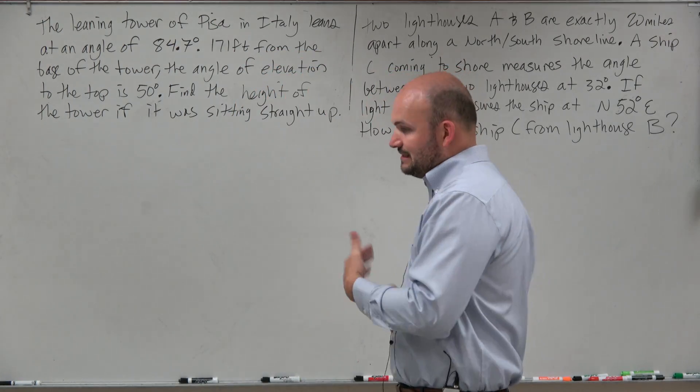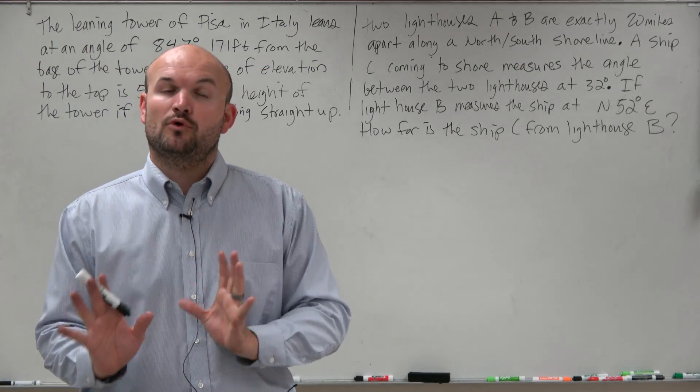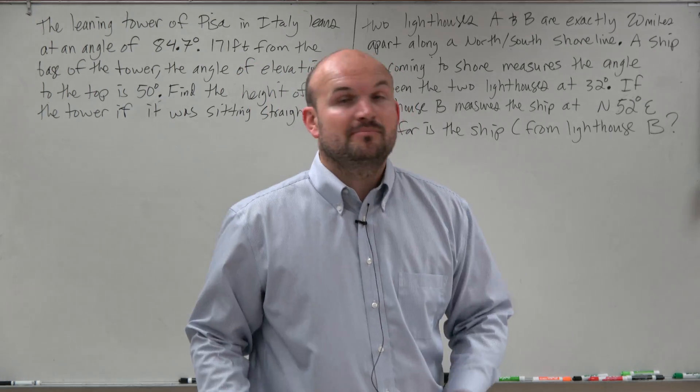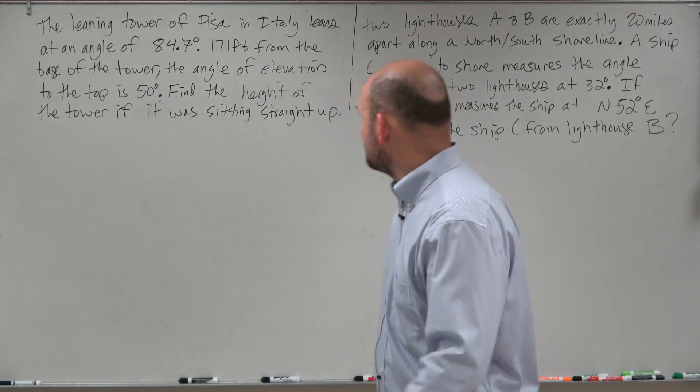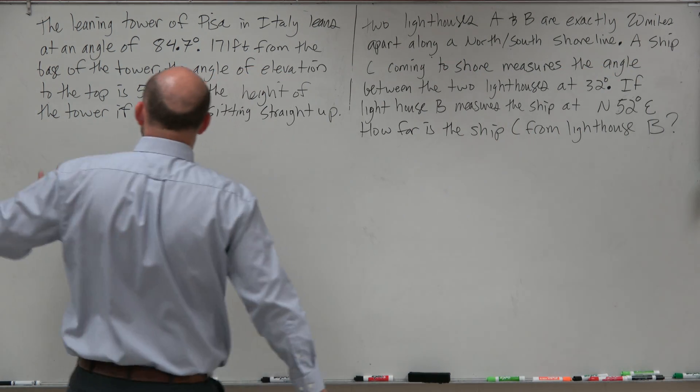So we have some word problems up here that the main important thing we're going to need to do is create our triangle. So therefore we can determine how to use the Law of Sines to solve for our missing angle or missing length. Which actually, I believe in this case is both going to be lengths.